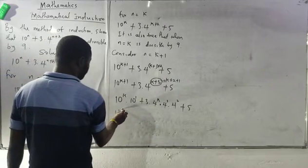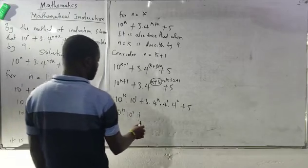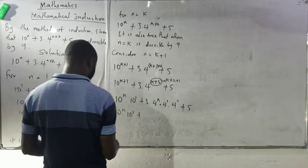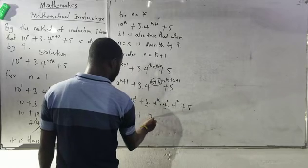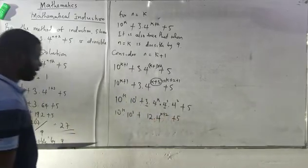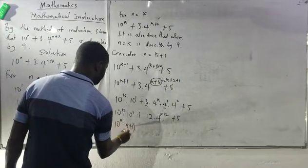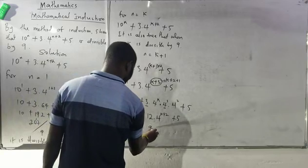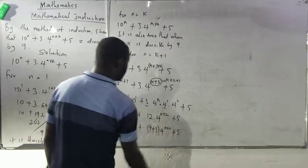I know that 10^k dot 10 gives 10 times 10^k. This times this will give 10, then 3 times 4 is 12, dot 4^(k+2) plus 5. Now I can rewrite 10 as 9 plus 1, and 12 as 9 plus 3, giving me: 9 plus 1 times 10^k plus 9 plus 3 dot 4^(k+2) plus 5.